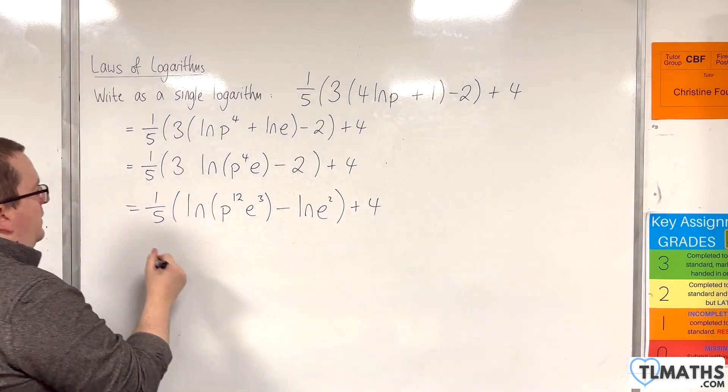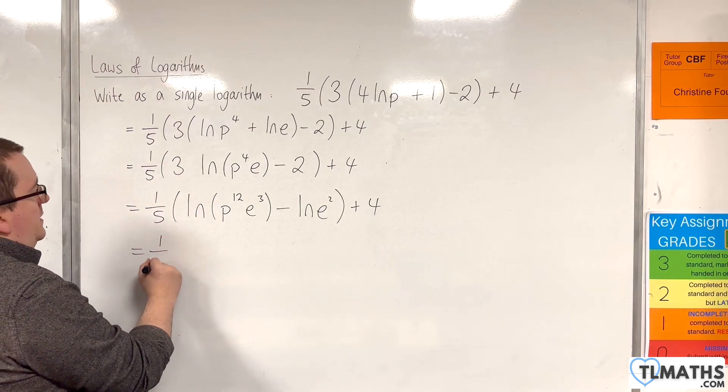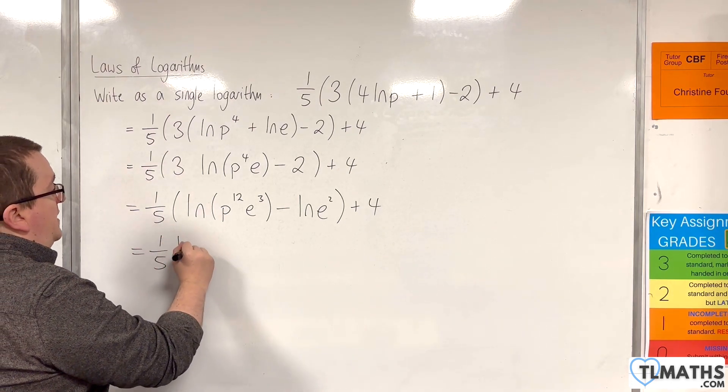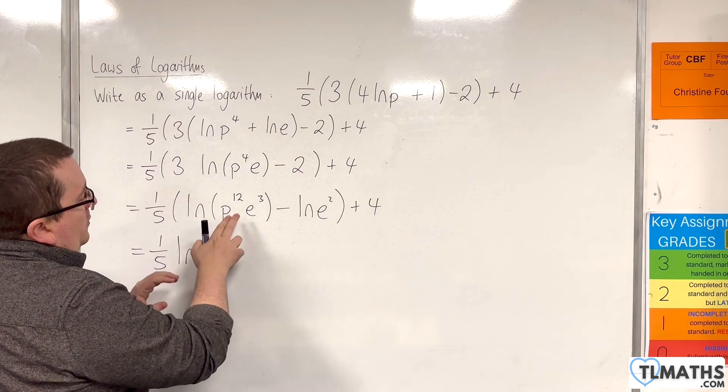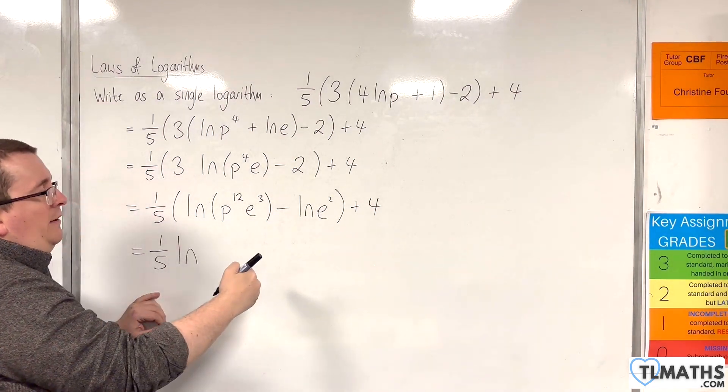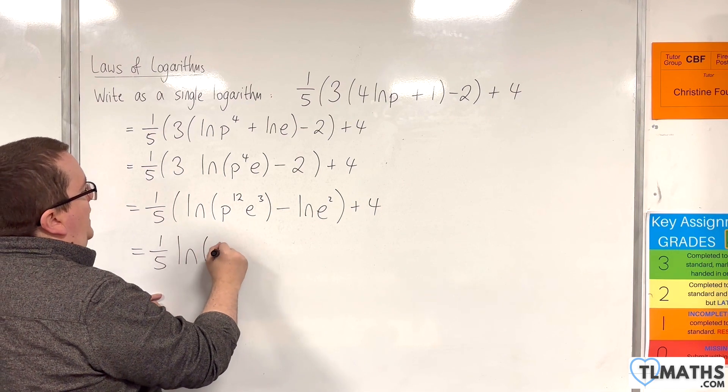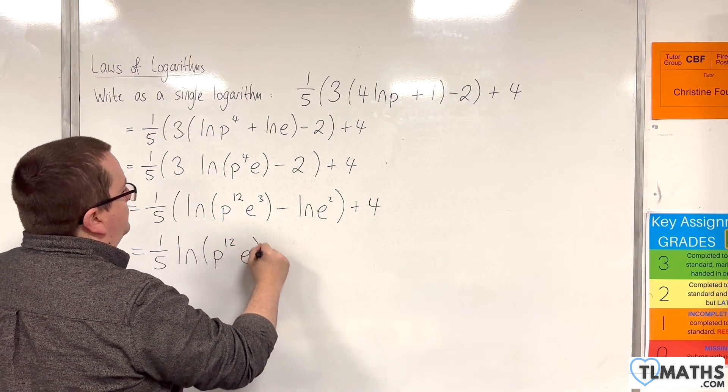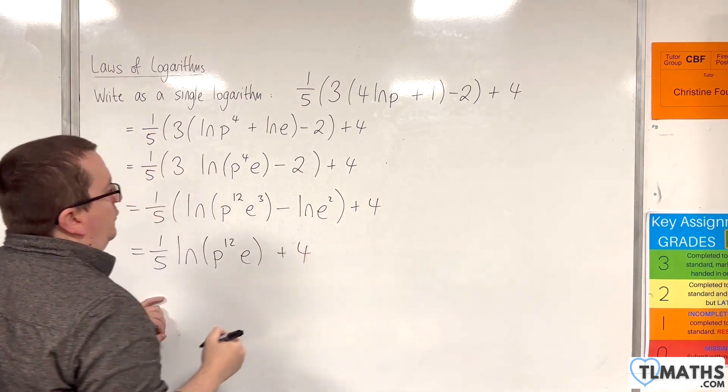Use the quotient rule on those logarithms there. So that would be 1/5 times the natural log of - we've got p to the 12 e cubed divided by e squared. So that would be p to the 12 e. And we've got the plus 4 on the end.